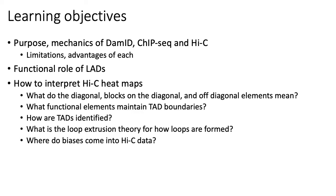You want to make sure you understand what it means for a Hi-C heat map to be block diagonal, what interactions on the diagonal represent, how we identify TADs, how you identify certain regulatory structures like super enhancers, and where biases typically come into play in Hi-C data analysis.